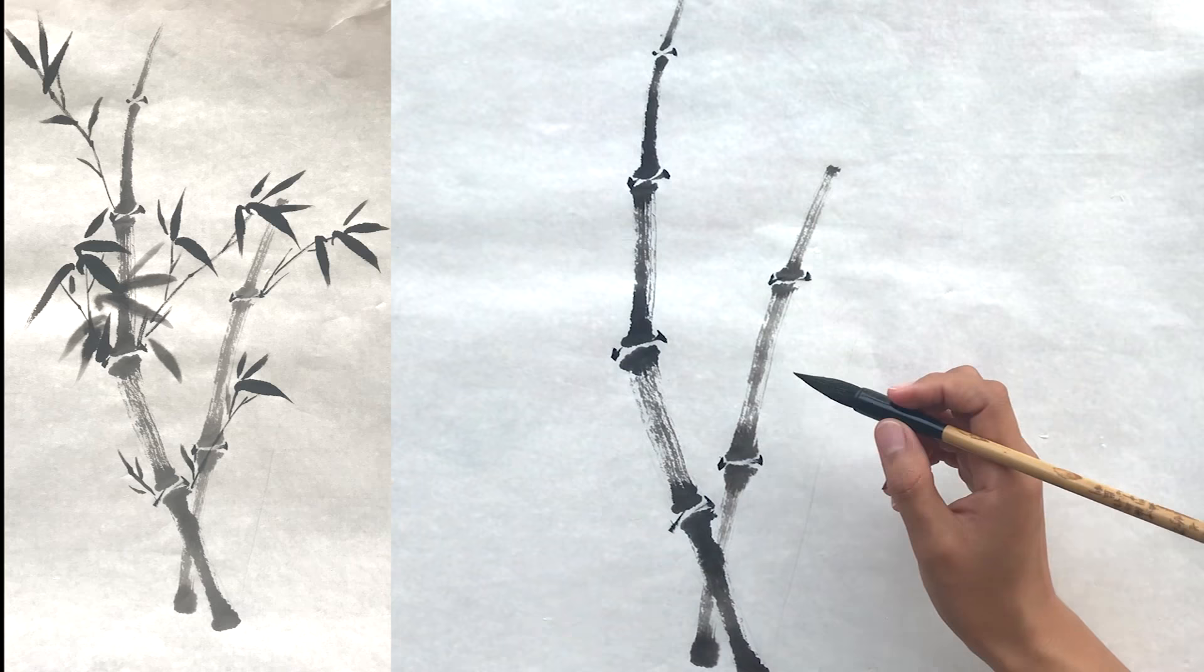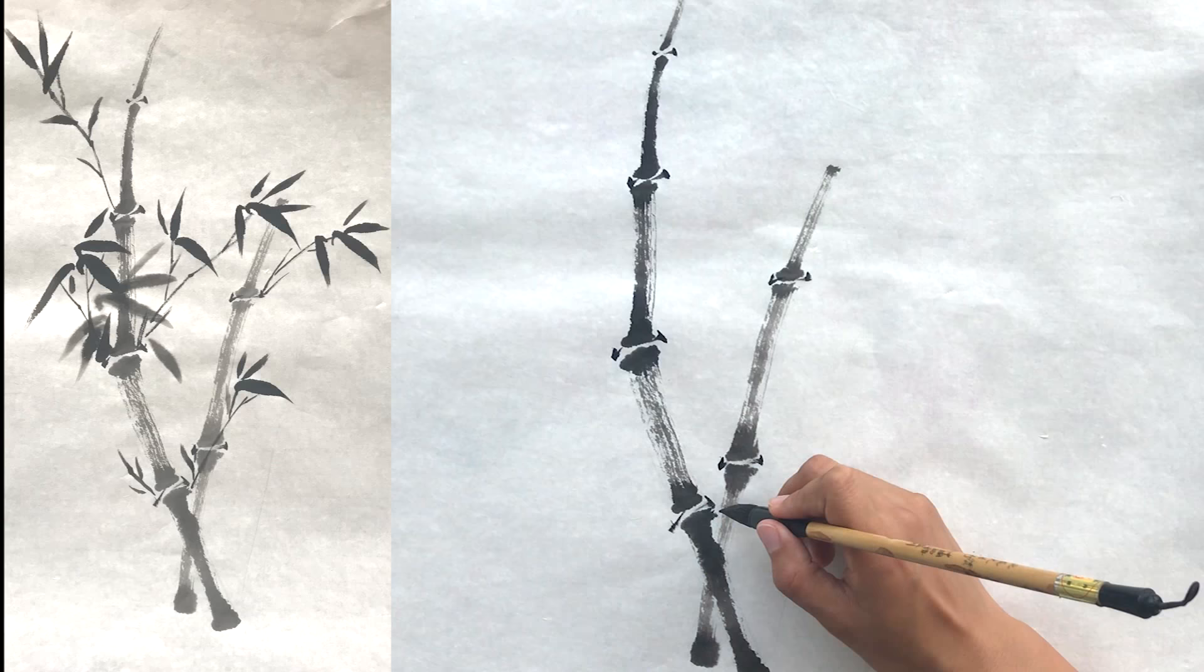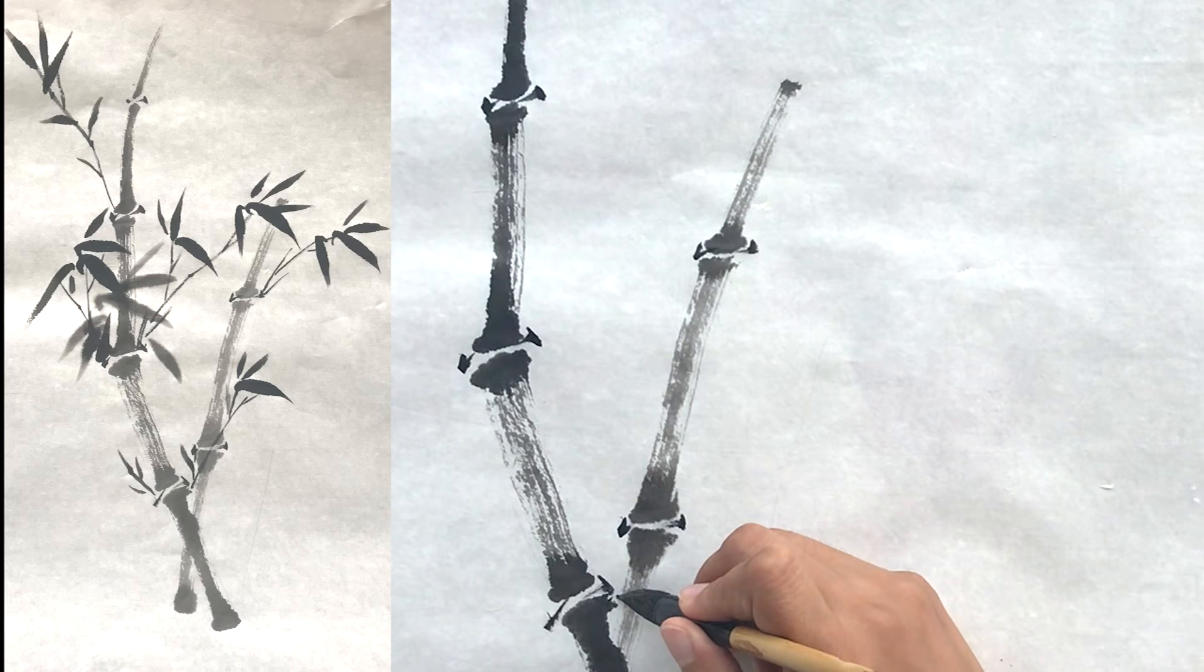The next step is to dip the brush into dark ink. Paint a branch off of this section.